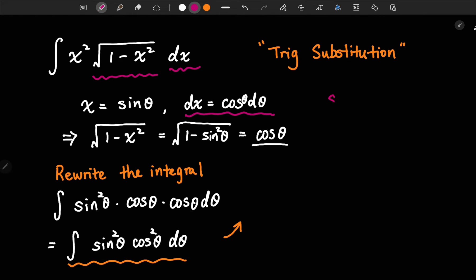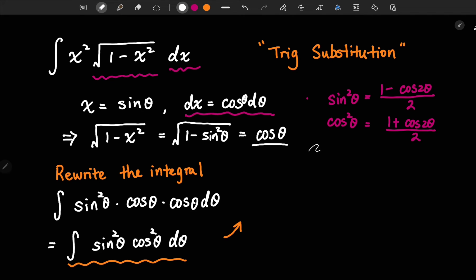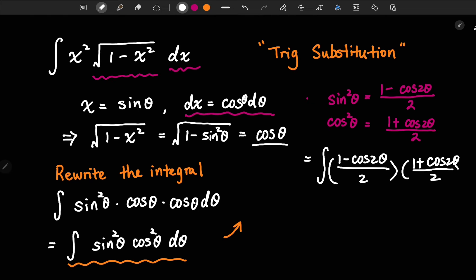The equations we're going to use: sine squared theta equals 1 minus cosine 2 theta divided by 2, and cosine squared theta equals 1 plus cosine 2 theta divided by 2. Let's use these two identities to plug into our equation. We get the integral of (1 minus cosine 2 theta) divided by 2, times (1 plus cosine 2 theta) divided by 2, d theta.